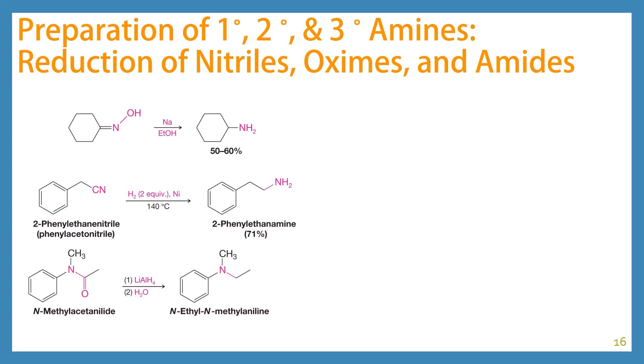Our next topic is preparing primary, secondary, and tertiary amines through reduction of other nitrogen-containing functional groups. An oxime can be reduced using sodium in ethanol to an amine. Nitriles and amides — which you've seen reduced before when we first looked at carboxylic acid derivatives — can also be used. You can reduce a nitrile using hydrogen gas and nickel, with an excess of hydrogen, to get to an amine. Or you can take an amide and treat with lithium aluminum hydride, which removes the carbonyl group entirely.